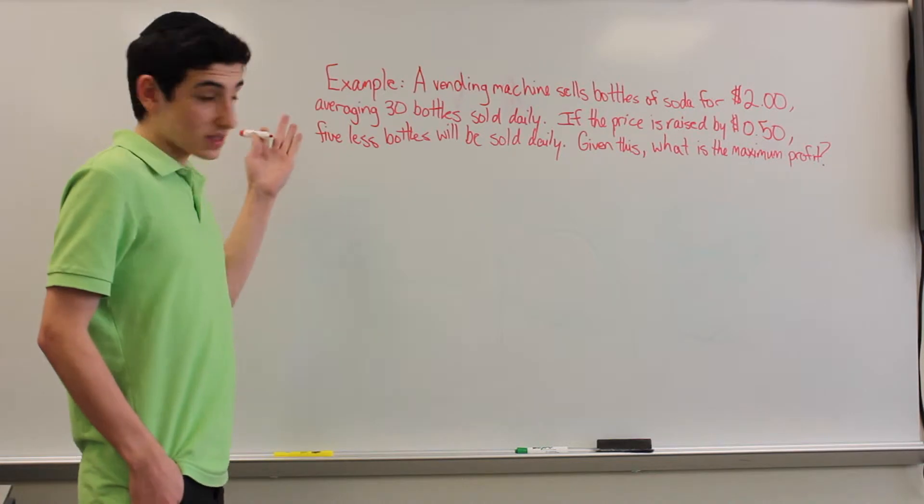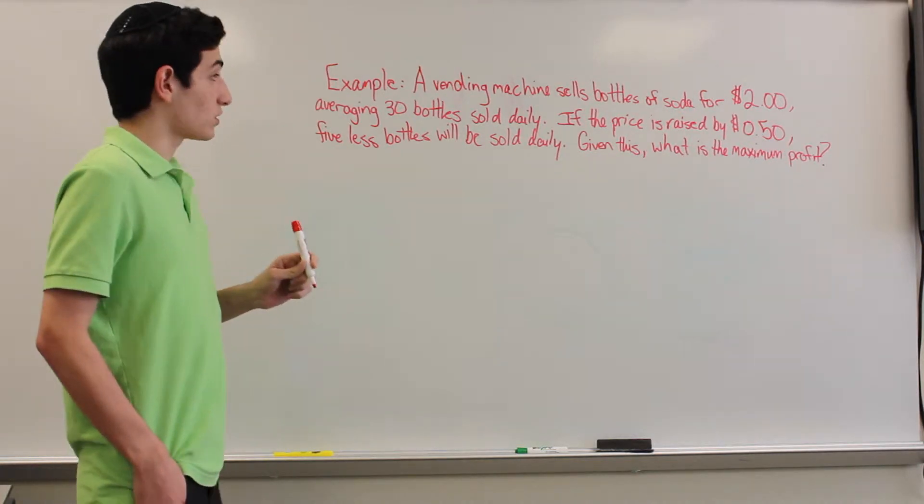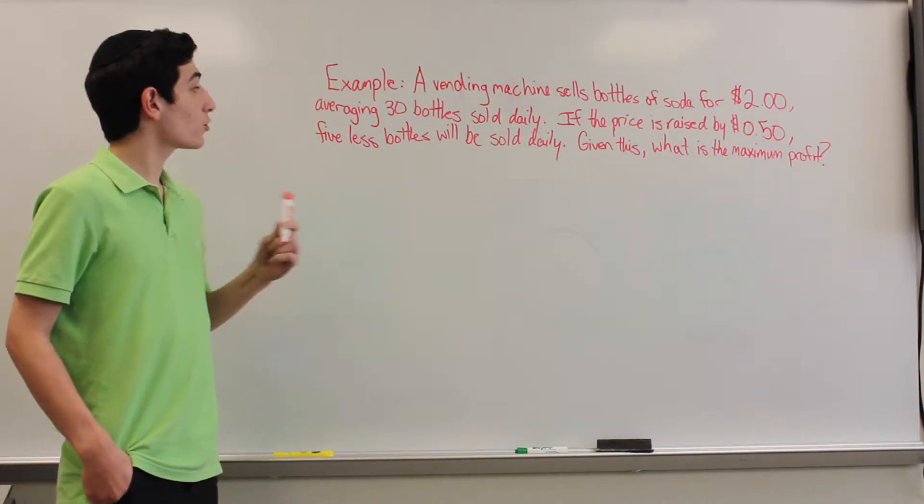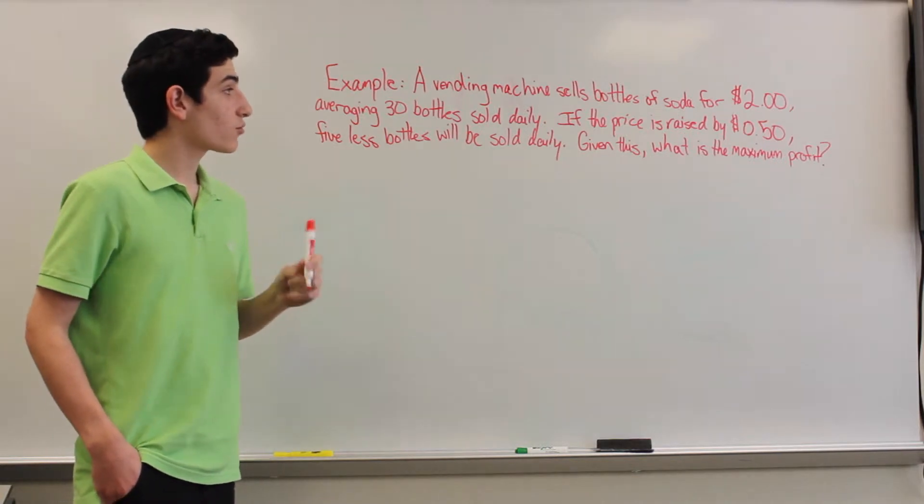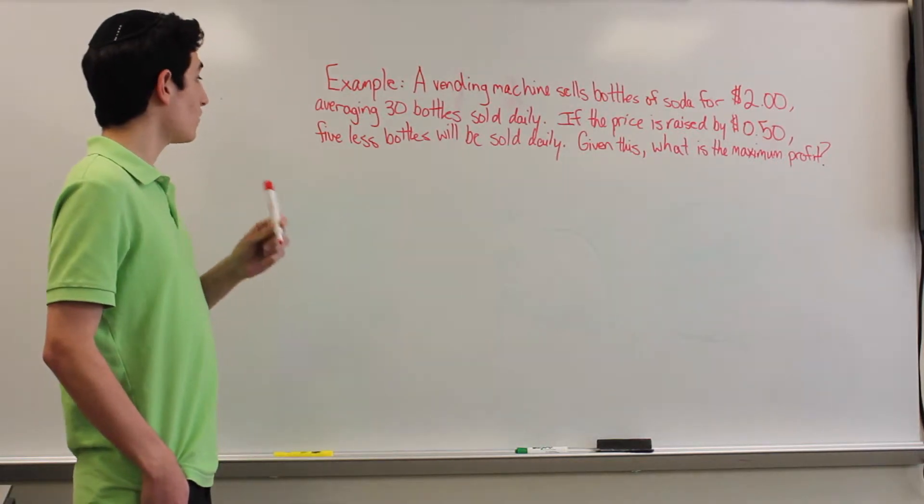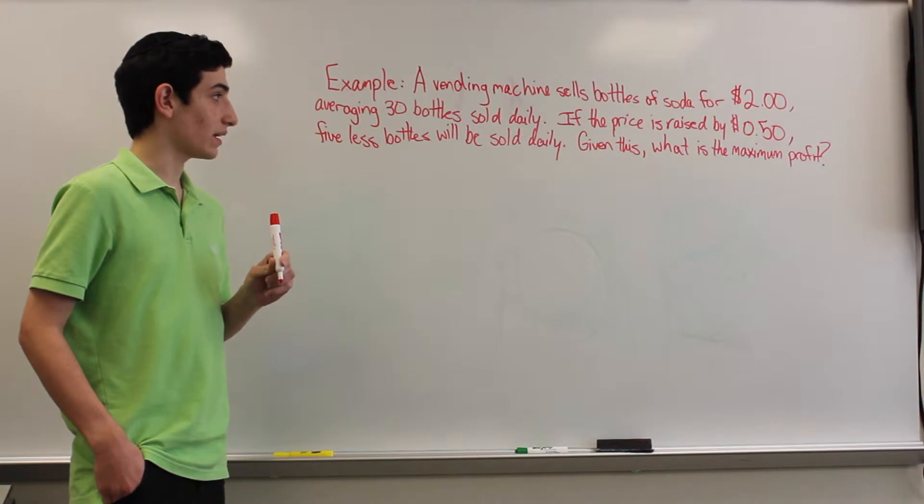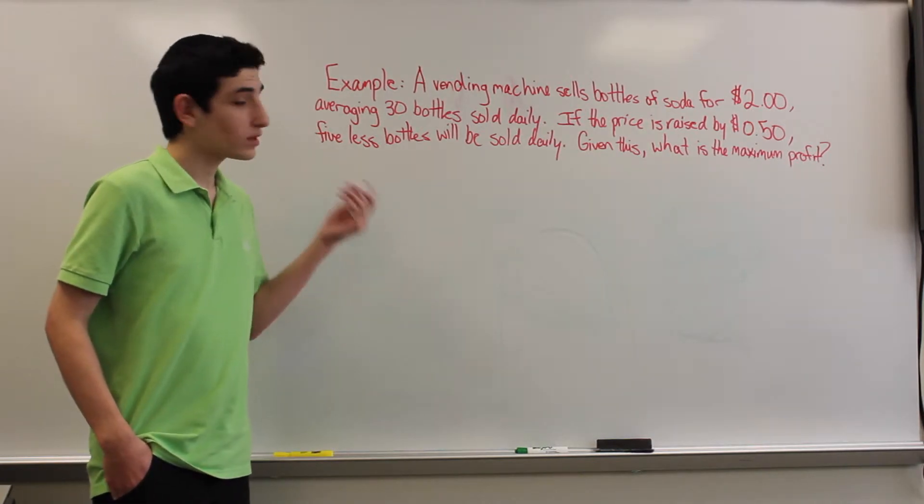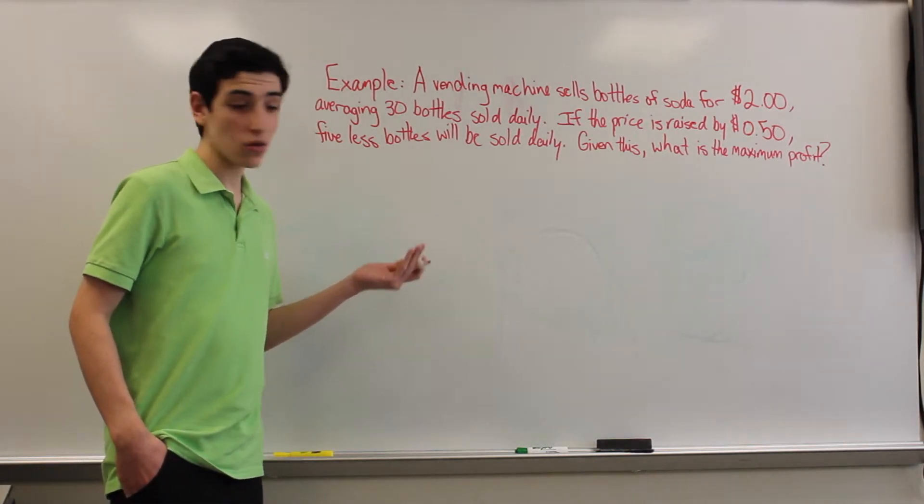So in our example, a vending machine sells bottles of soda for $2, averaging 30 bottles sold daily. If the price is raised by 50 cents, 5 less bottles will be sold daily. Given this, let's see if we can find our maximum profit.